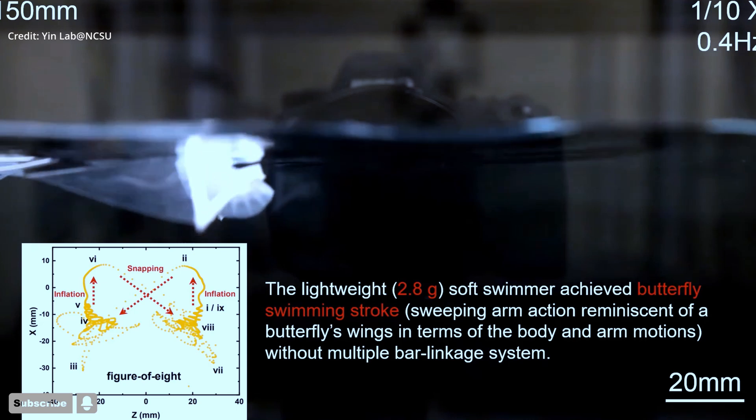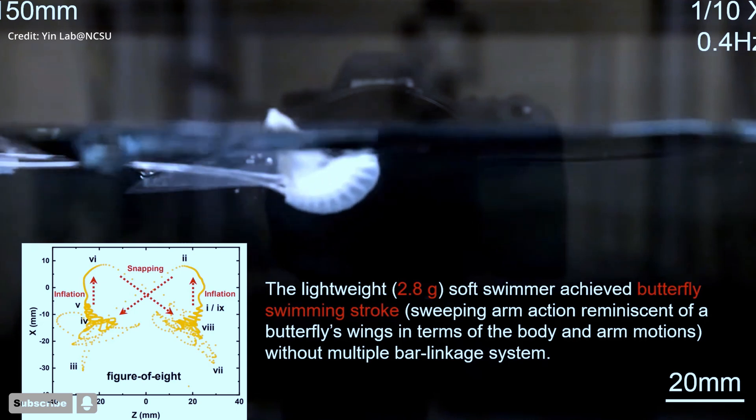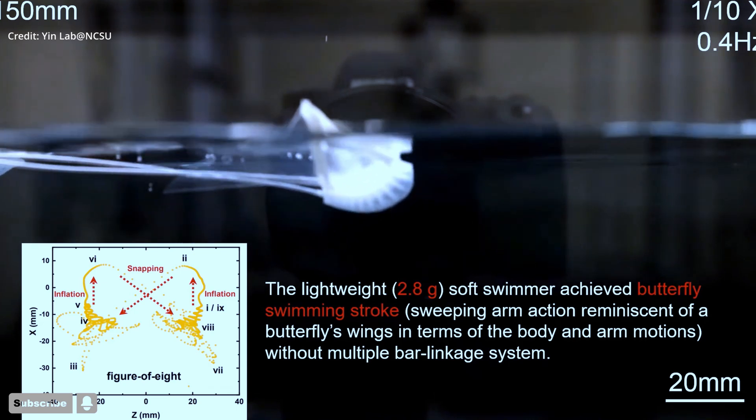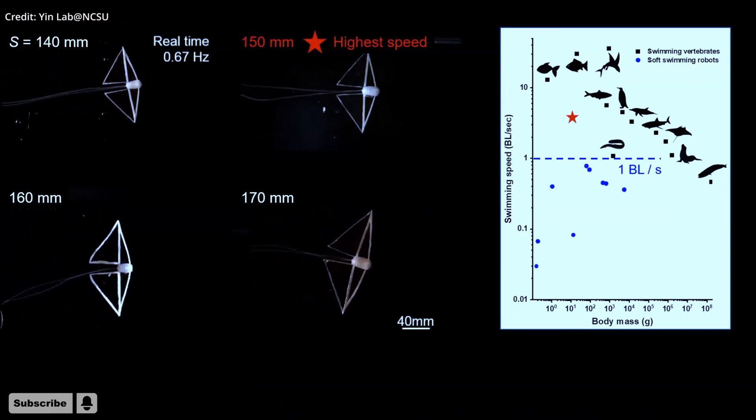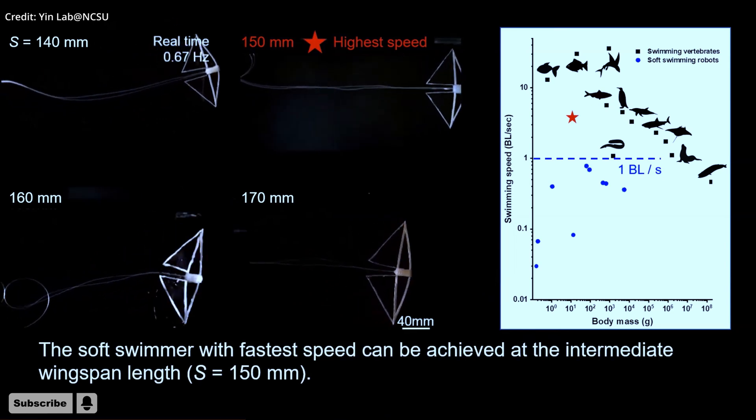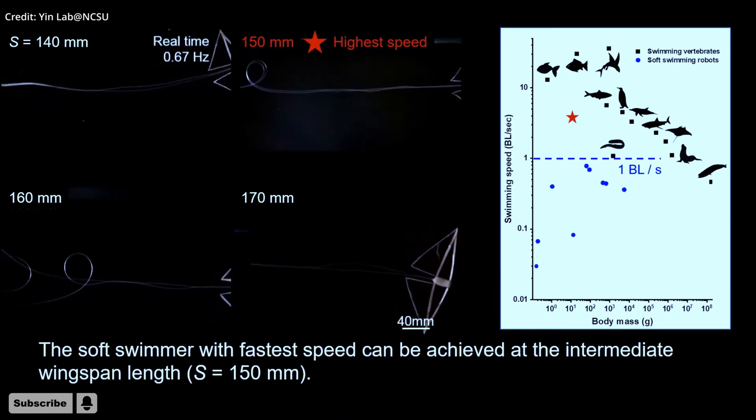One was designed with speed in mind, and it was capable of 3.74 body lengths per second on average. Another was made to be extremely maneuverable and able to make quick turns to the right or left. The speed of this dexterous prototype was 1.7 body lengths per second.